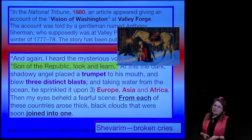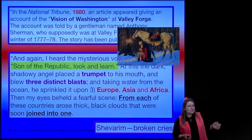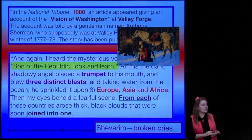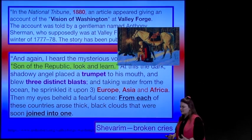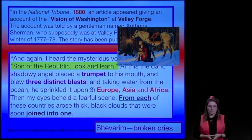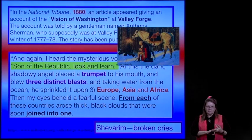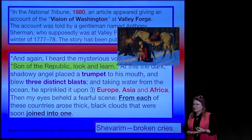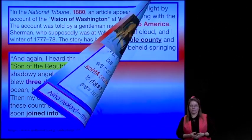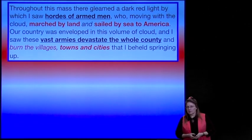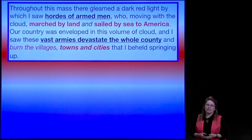The dark, shadowy angel placed a trumpet to his mouth and blew three distinct blasts. Right there we have a Hebrew prophecy—the day of trumpets, there are three distinct blasts that are blown, called the shevarim, the broken cries of God's people calling out to the Lord. And the angel took water from the ocean and sprinkled it on Europe, Asia, and Africa. Then my eyes beheld a fearful scene. From each of these countries arose thick black clouds soon joined into one, gleaming with a dark red light by which I saw hordes of armed men marching by land and sailing to America by sea.